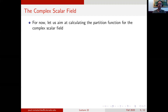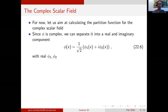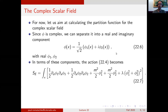For the time being, let us now investigate the complex scalar field action and the resulting partition function. Since phi is complex we can always separate it into a real and imaginary component. We write phi equal to 1 over square root of 2 times phi 1 plus i phi 2, where both phi 1 and phi 2 are purely real. In terms of these components, the action given in equation 22.4 becomes one-half the two-derivative term of phi 1, one-half the two-derivative term of phi 2, m squared phi 1 squared, m squared phi 2 squared, and then lambda times phi 1 squared plus phi 2 squared, all squared.